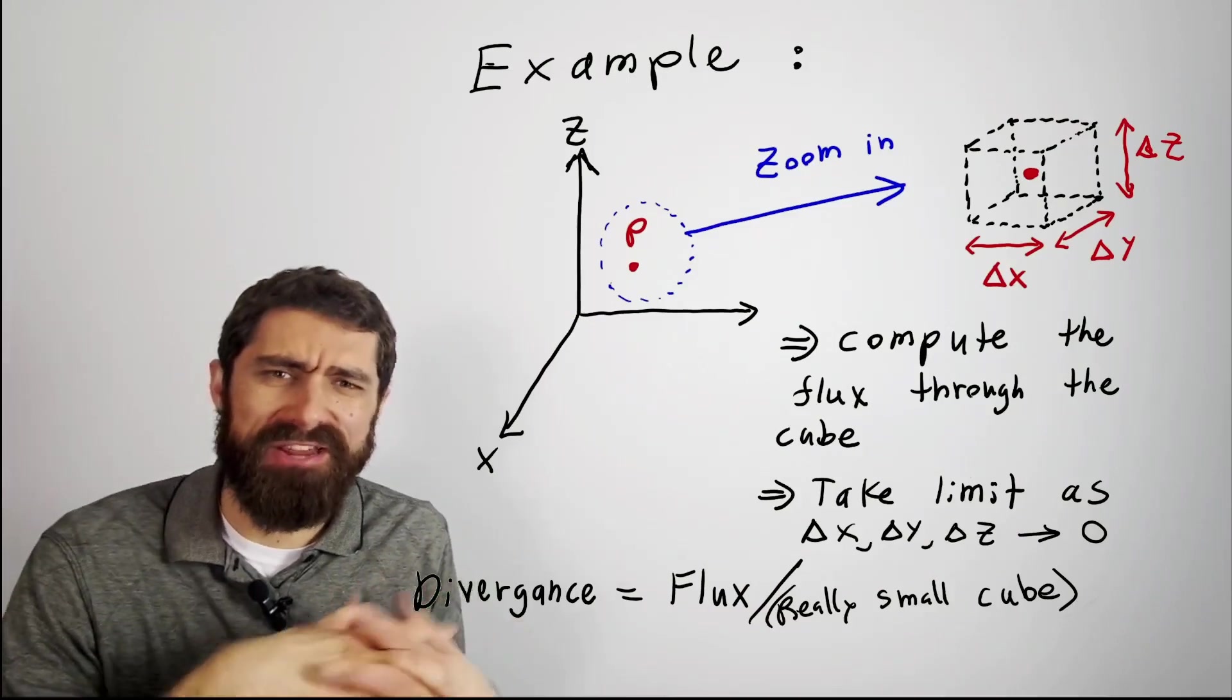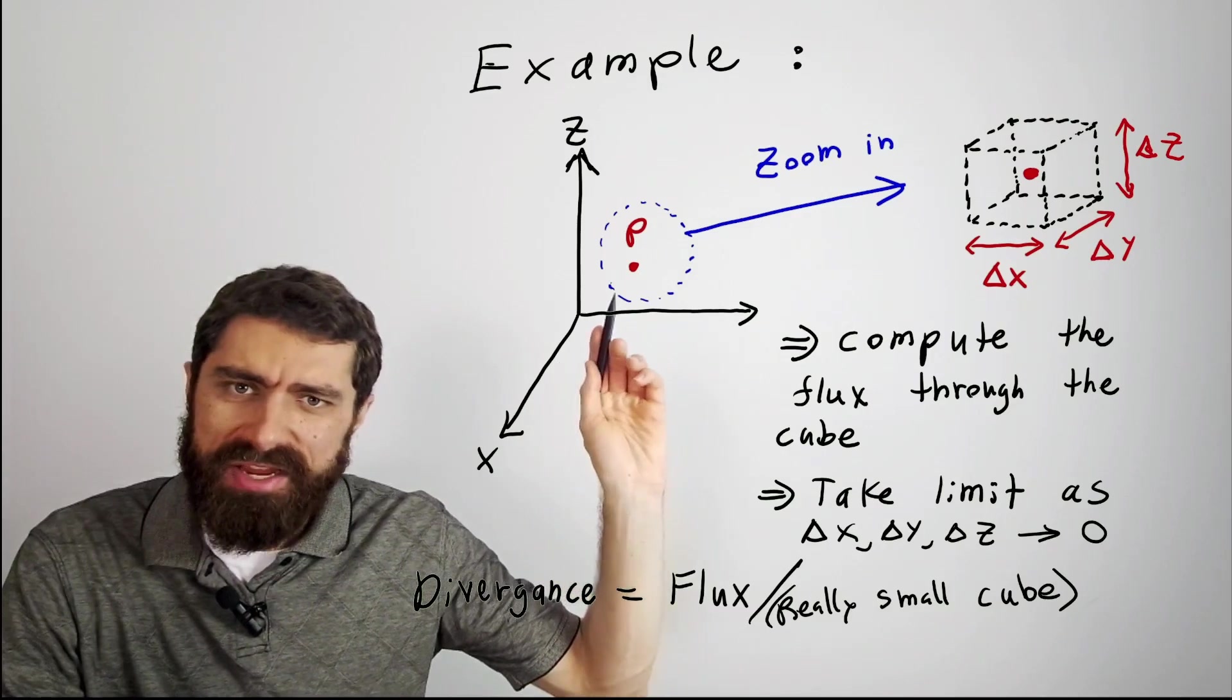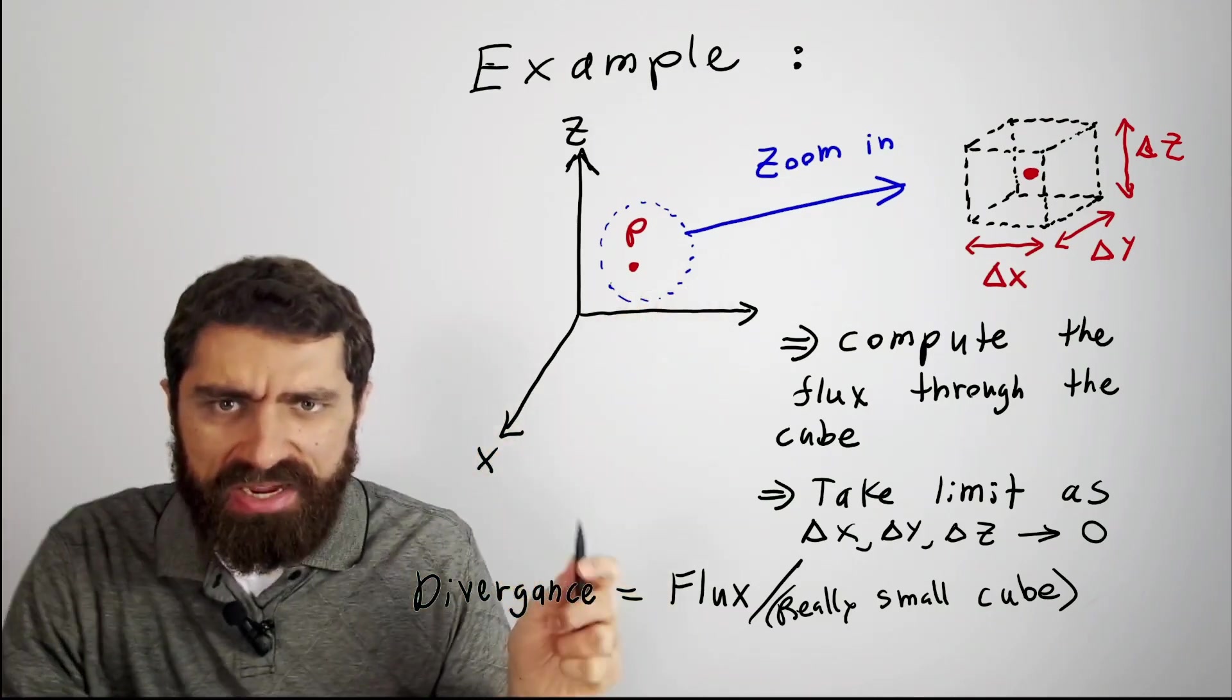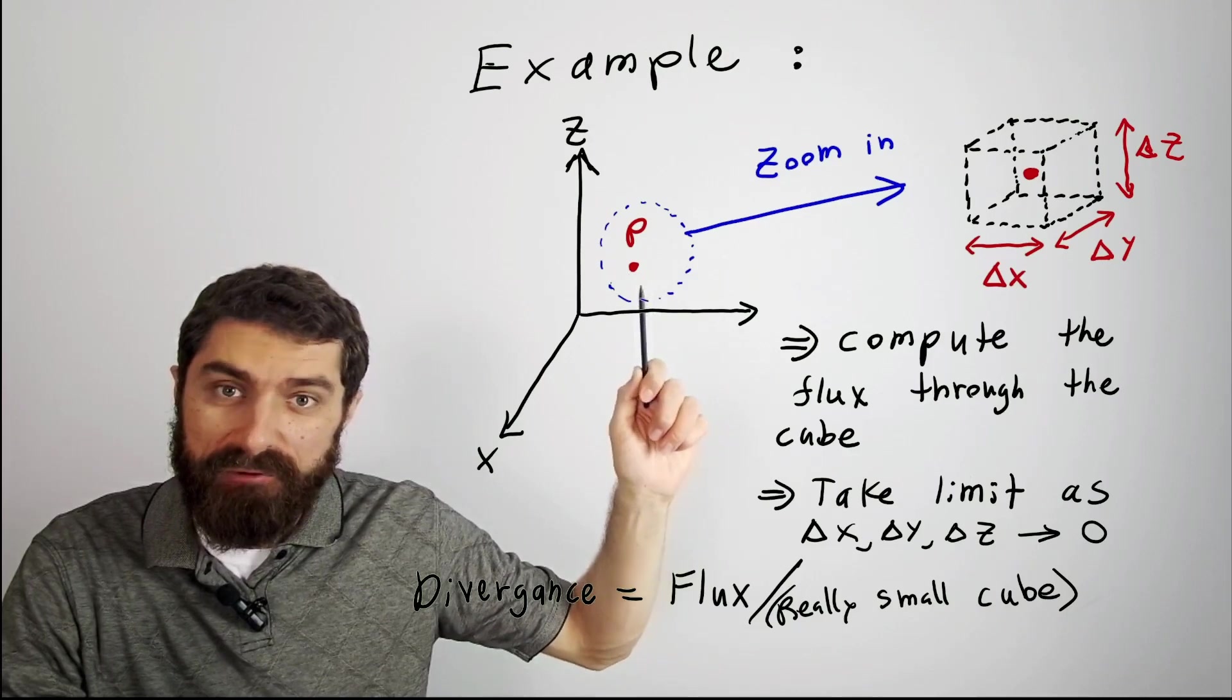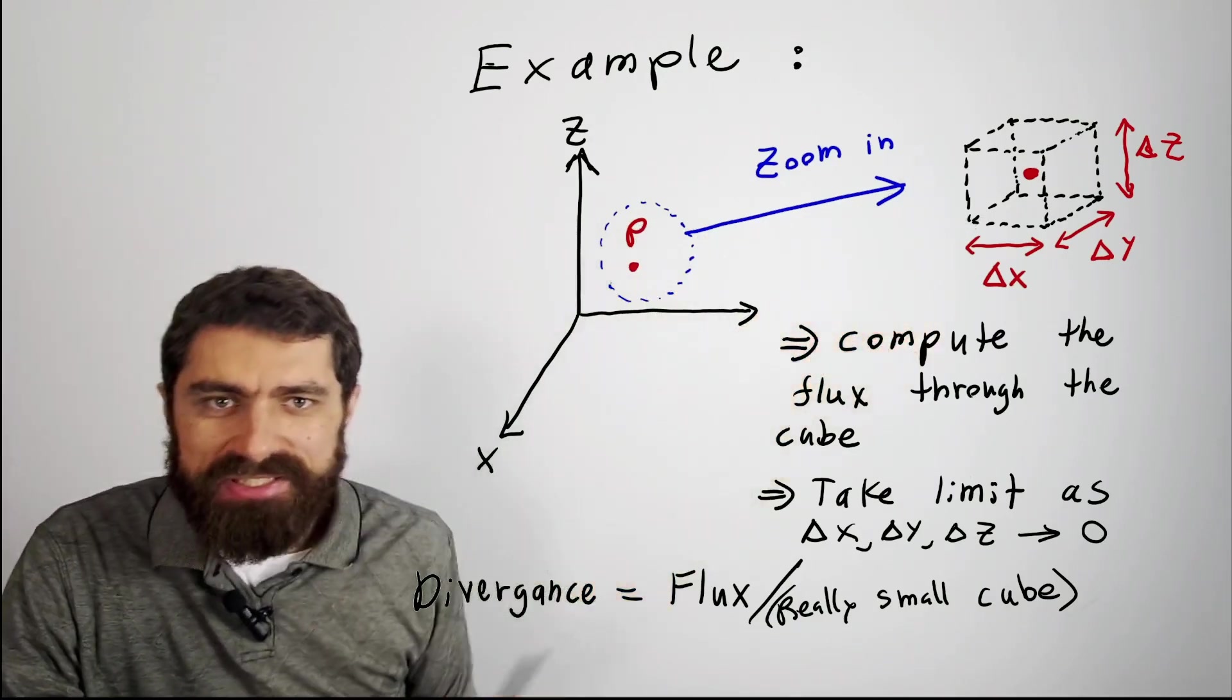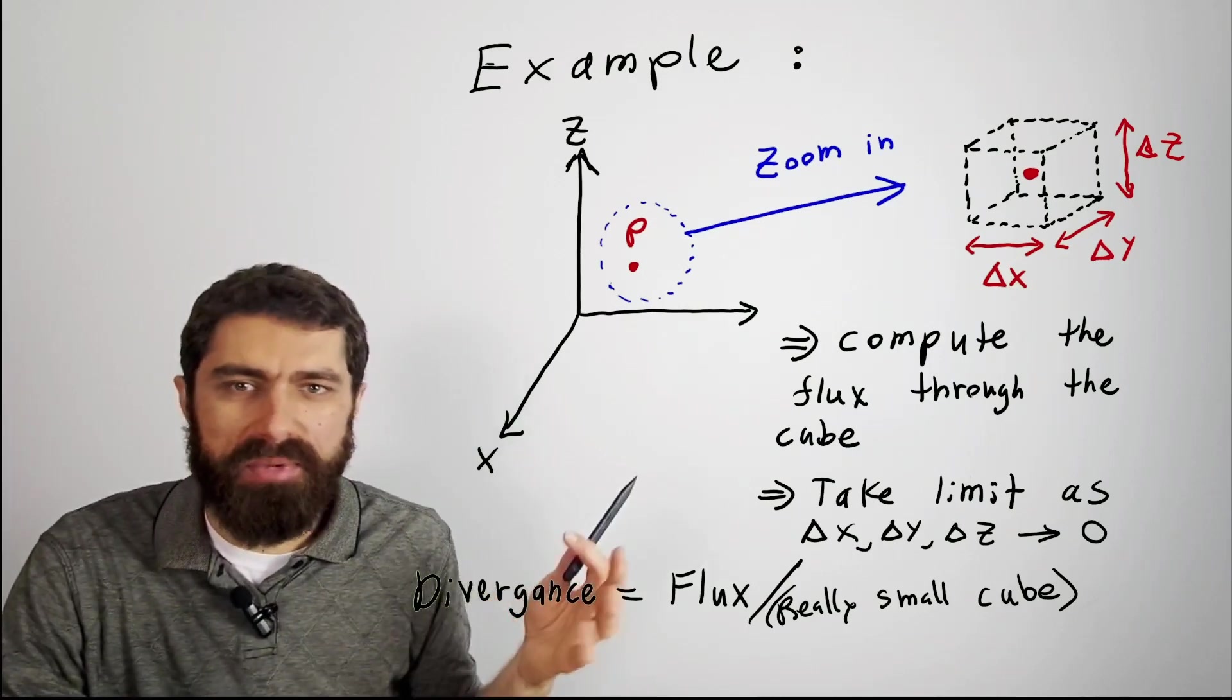So how do we calculate the divergence, or the flow going into or out of a point? Well, take this example here. Let's say we pick an arbitrary point in an XYZ coordinate system, and there are electric fields in the vicinity. Basically what you could do if you wanted to calculate the amount of flow going into or out of that point is you could zoom in on the point and create a really tiny cube that goes around the point, giving it some dimensions delta x, delta y, and delta z. It doesn't have to be a cube, you could also use something like a sphere.